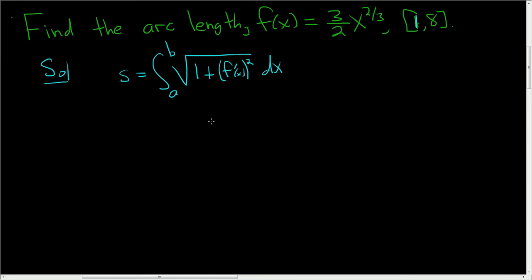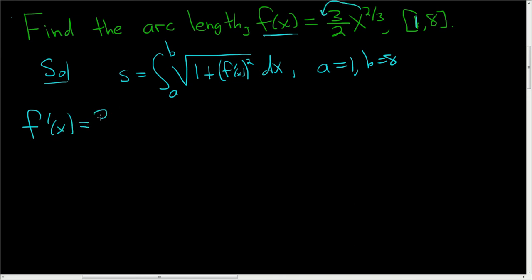So in this problem, all we have to do is take the derivative, plug it into the formula, and we're done. a is equal to 1 and b is equal to 8. So f prime of x — we take the derivative, we bring the 2/3 downstairs, so we get 2/3 times 3/2, x to the 2/3 minus 1, which is negative 1/3. These cancel, and so we end up with x to the negative 1/3.